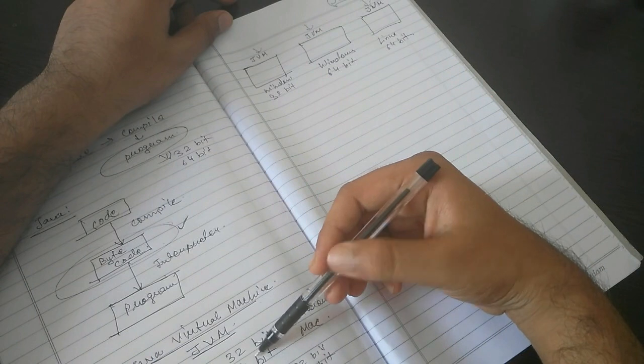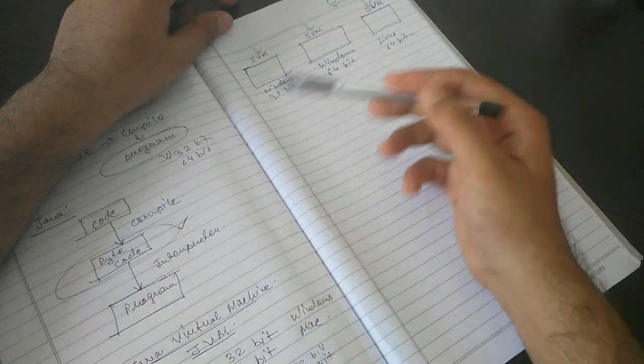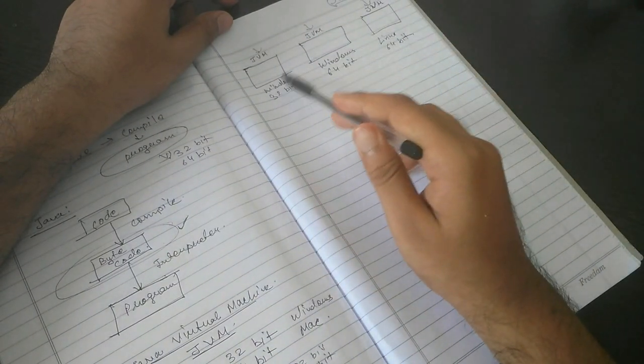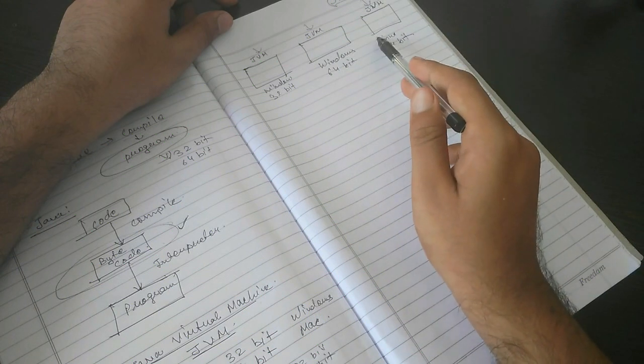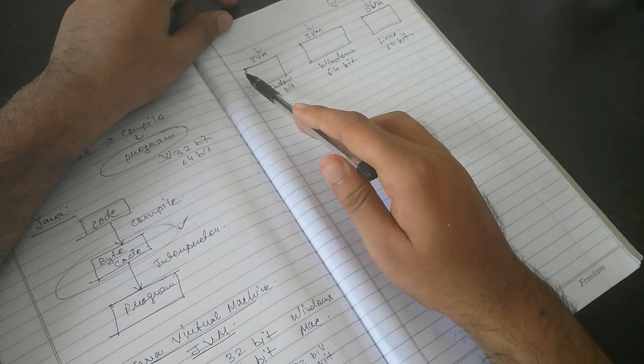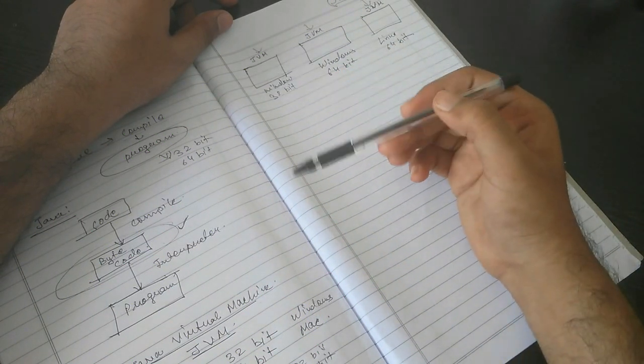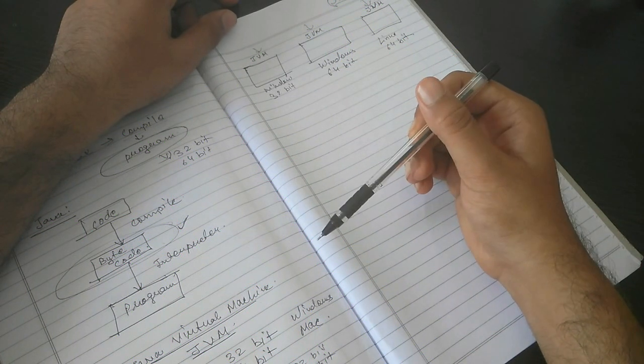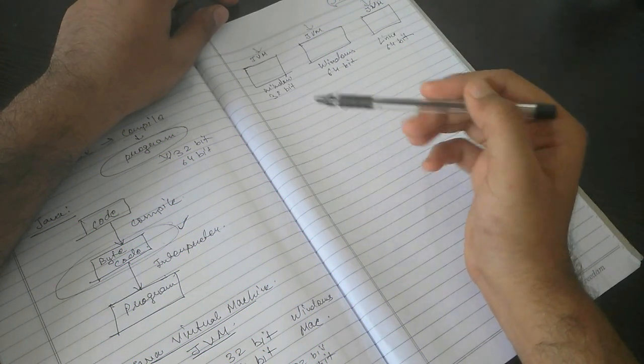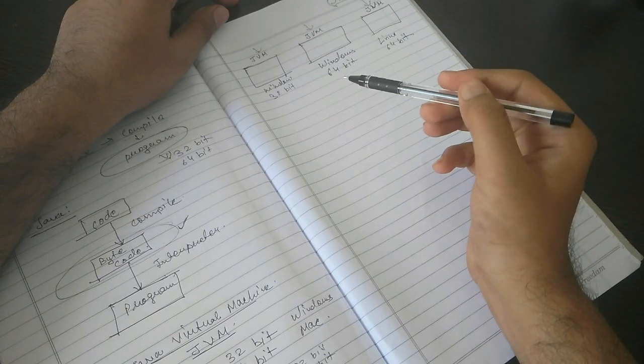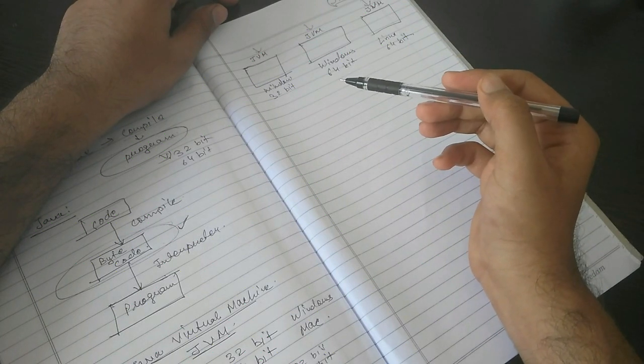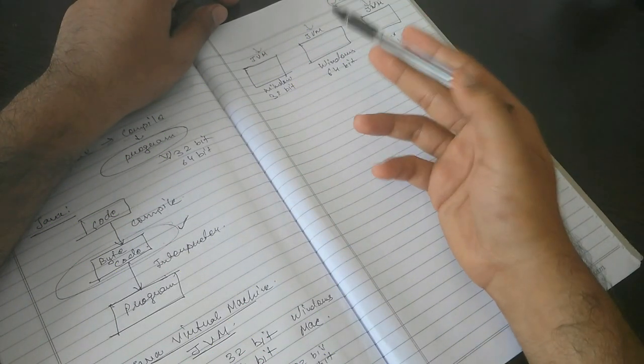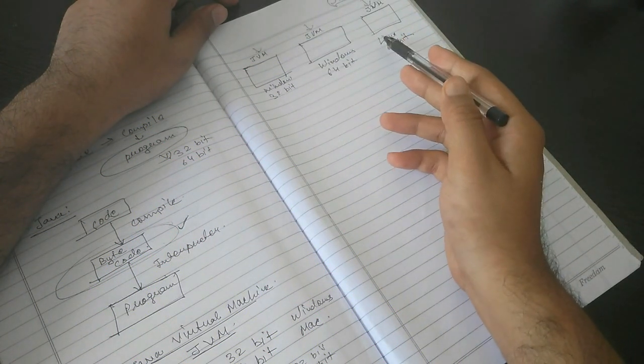This bytecode and all your programs are compatible with all three types of systems present here. But the JVMs are different. So when you write a program, you generate bytecode for it and give it to all the users. All the users have installed their respective JVMs in their system, and these programs become compatible with all of these systems.